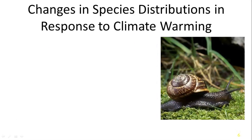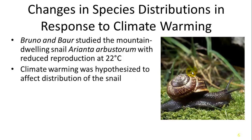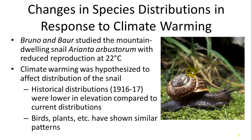There are also more active, quicker responses with changes in human-caused global climate change. Bruno and Bauer studied a mountain-dwelling snail, Arianta arpa storm, which had reduced reproduction at 22 degrees Celsius. As things got warmer and warmer, they had less and less reproductive success. When they compared current populations to historical distributions, historical distributions were much lower in elevation. The snails are shifting to higher elevations with warming. Birds, plants, and other organisms have shown a similar pattern in response to global climate change.